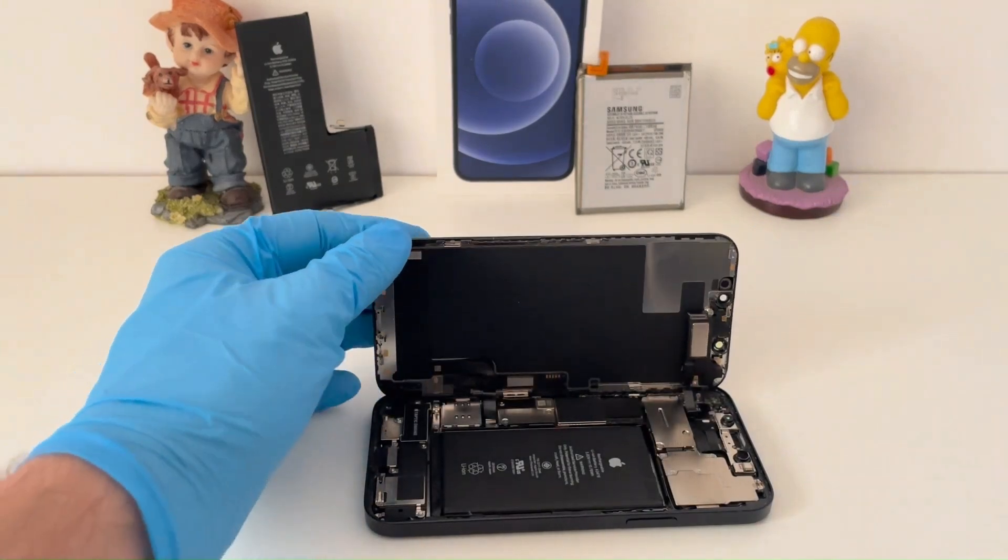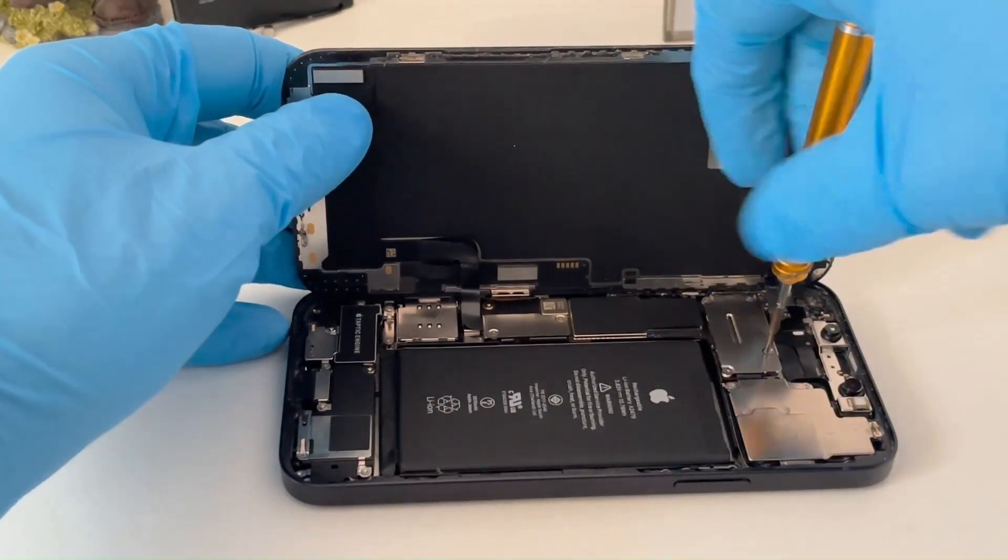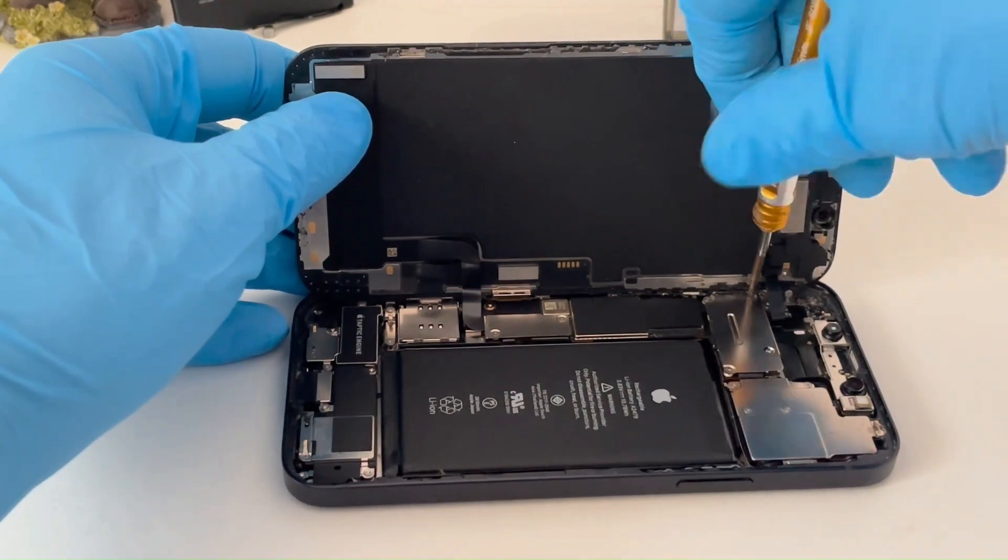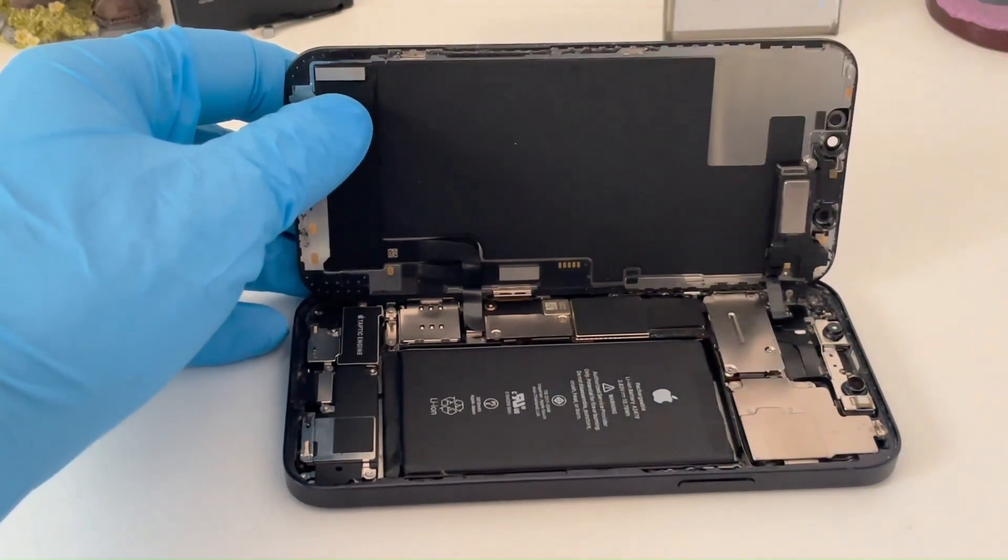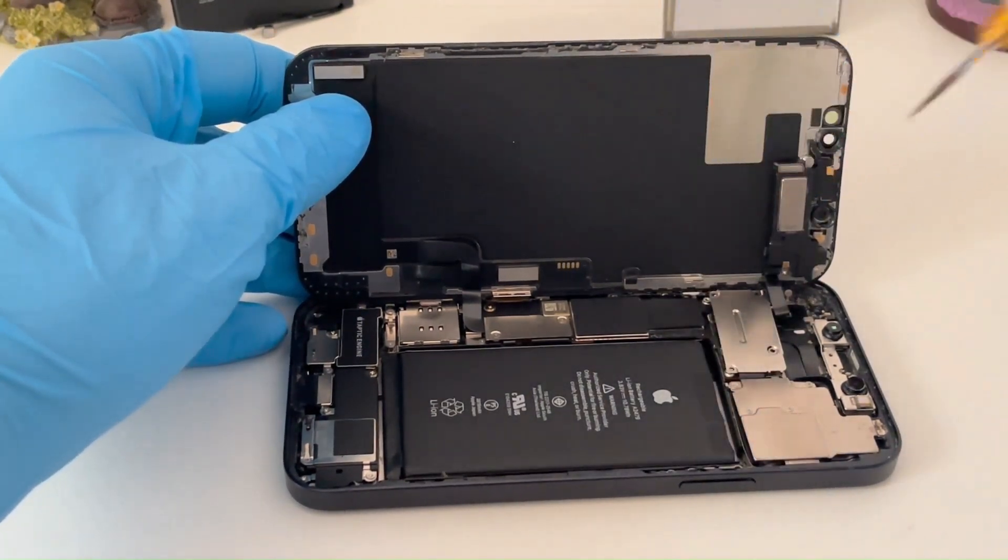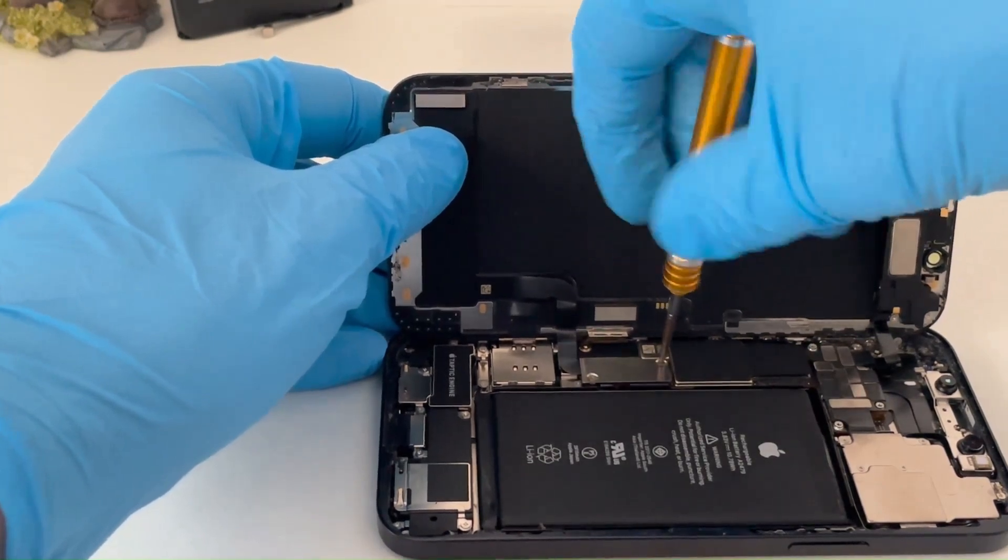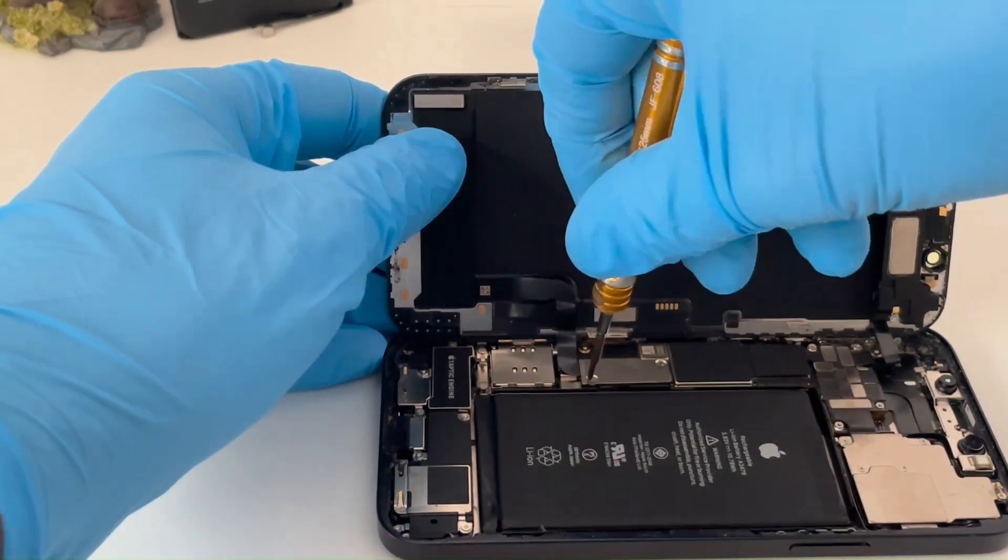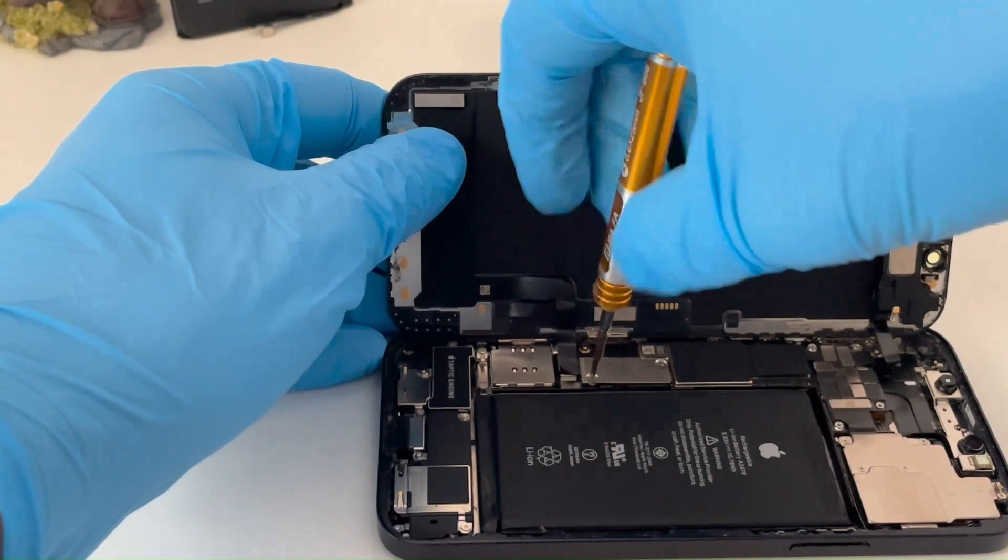As you know, with newer iPhone models, you cannot replace the actual battery with another one because a notification will appear in the settings. To perform the procedure correctly, only the battery cell must be replaced and the BMS board will be transferred from the original battery.